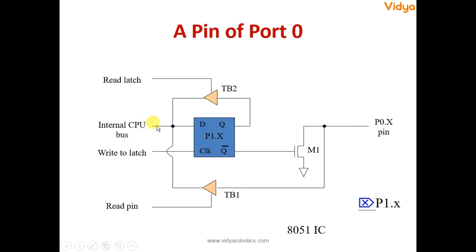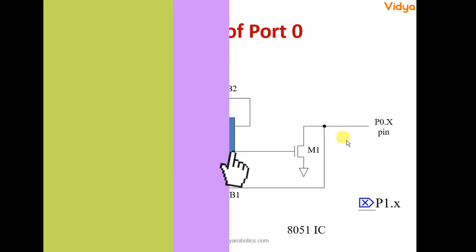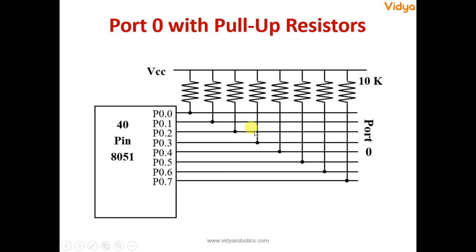Even if I give 1 or 0 onto this pin, whatever comes at Q bar 0 or 1, there is nothing going to happen. The transistor will not turn on, it will not also turn off. And you experience literally no potential onto this particular pin. And that is why with port 0, for every pin, we need a pull up resistor to be connected with port 0 externally.